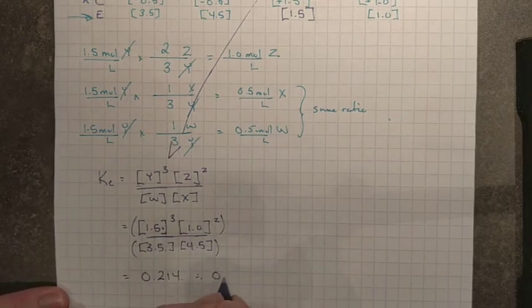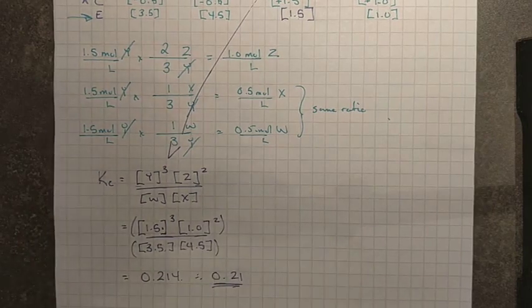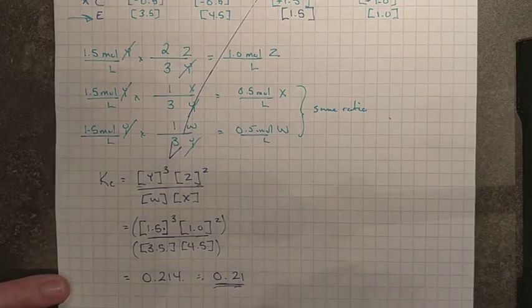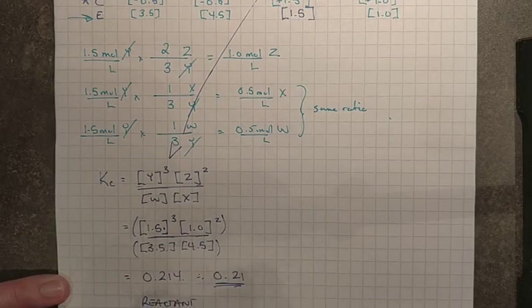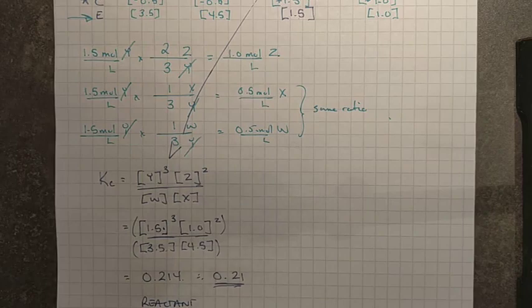Therefore, 0.21 when we maintain our significant digits here. That is a number way less than 1. Well, maybe not way less, but less than 1. So, that tells me that this should be reactant favored. So, we have that. The last thing we want to do, this one was percent reaction. I'll see if I can get through that one really quickly.